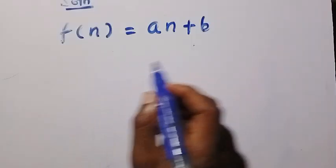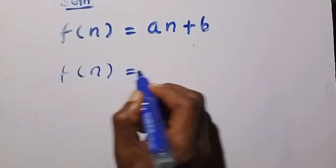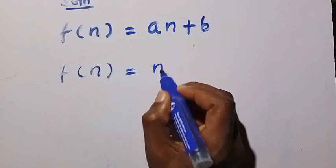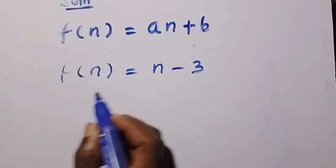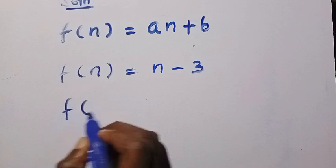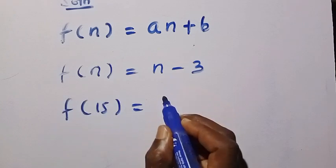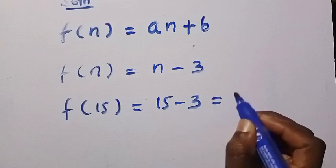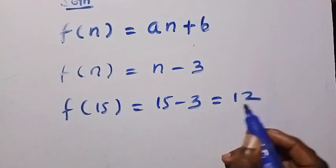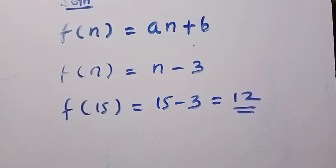Substituting these values back, f of n equals 1 times n minus 3, that is n minus 3. To find f of 15, we substitute n equals 15: f of 15 equals 15 minus 3, which equals 12. Both methods give the same answer. Thanks for watching, and don't forget to subscribe to this channel. See you in the next video — never stop learning, bye bye.